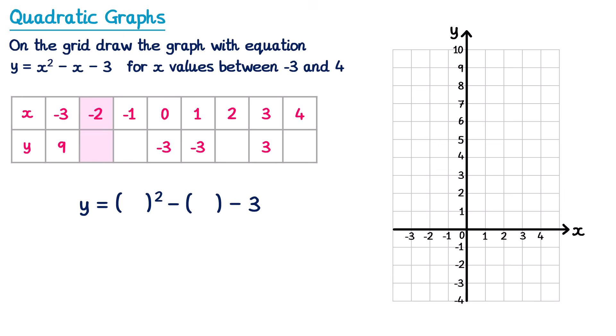We will do when x is negative 2. So we write negative 2 inside both brackets. We've got y equals negative 2 squared which is positive 4. We need to be careful on the next bit because we're subtracting negative 2 — when you subtract a negative number the result is just like adding the positive, so this equals plus 2. Then we have negative 3 at the end. Four plus 2 is 6, and 6 take 3 is 3. So y will be 3.